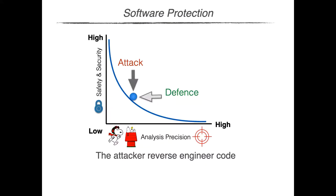Software protection is another interesting scenario where program analysis plays a central role, but in a dual way. Adversaries use program analysis to understand the inner workings of programs in order to reuse portions of proprietary code, or to tamper with the code to make it behave in some unexpected way that provides an advantage to the attacker. In the software protection scenario, the code is completely available to the potential attacker, who can use any analysis tools to inspect and understand how it works in order to violate the integrity of the code or its intellectual property. In this setting, researchers have developed program transformations called code obfuscation with the explicit intent of complicating and confusing program analysis in order to protect the code.